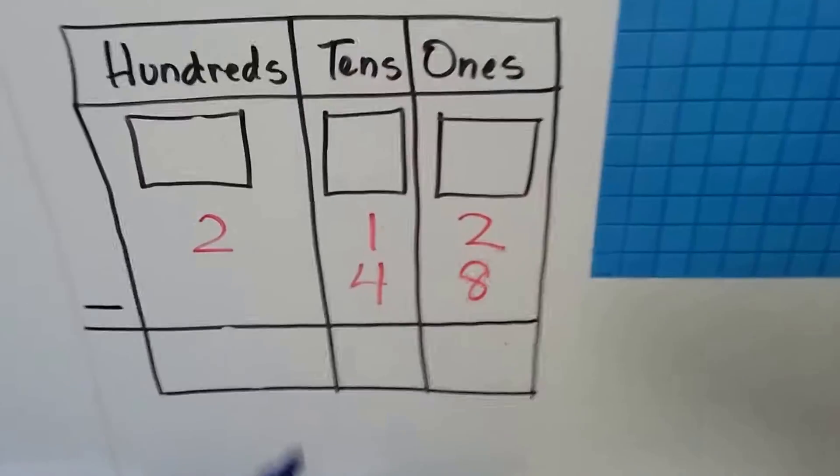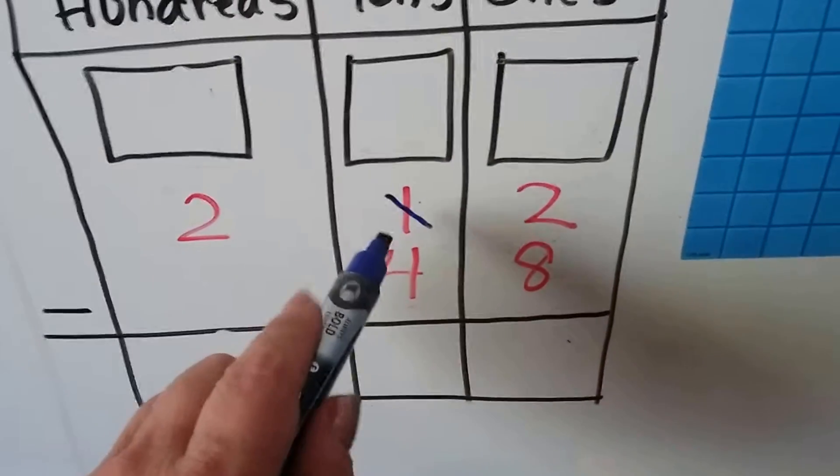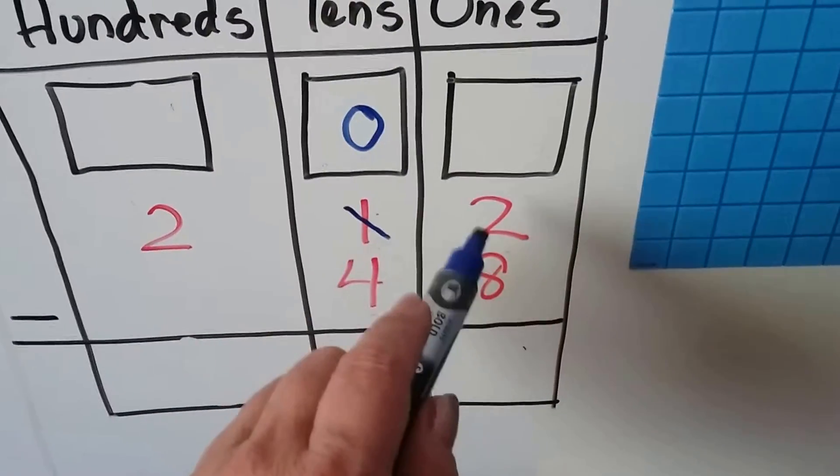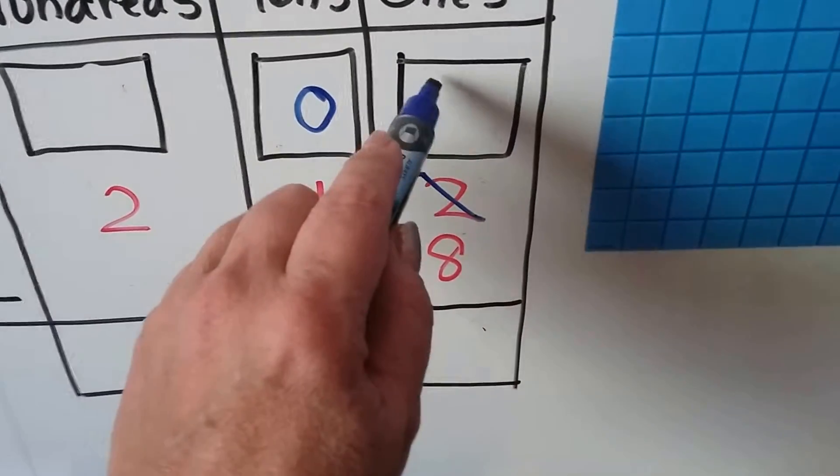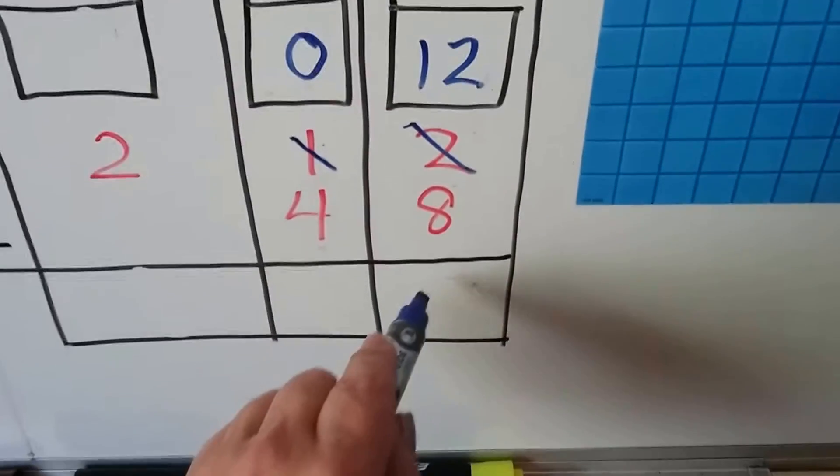Starting with the ones place, we have a 2 and need to take 8 away. We can't do that. But we could say to the tens, hey, can I borrow one? Well, he's going to say that's all I got. But okay, he becomes a zero now. And instead of this being a 2, because it gave a 10 to it, we now have 12 ones. Now we have 12 take away 8 and that's a 4.